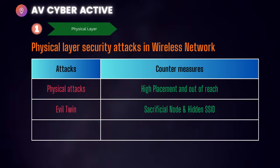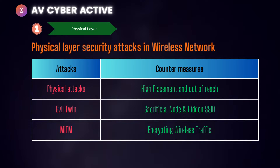Another countermeasure for evil twin attacks is to hide your SSID — the name of your network, which stands for Service Set Identifier. The third and probably most important countermeasure is preventing man-in-the-middle attacks. Even wireless networks are prone to this attack. A simple way to counter it is ensuring that a key is in place when connecting to your wireless network, using that key to generate public-private key pairs as a session key — essentially encrypting your entire wireless network.